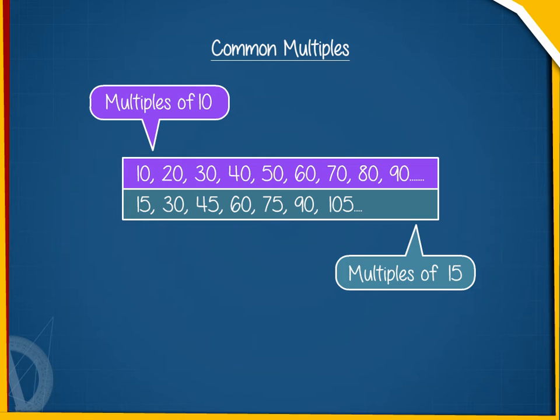On comparing, we see that there are some multiples which are common for both 10 and 15. The numbers 30, 60, 90, etc. are multiples of both 10 and 15.